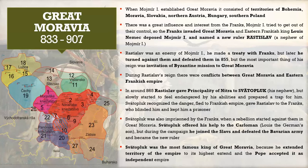Rastislav was an enemy of Mojmír the First — they did not have a good relationship even though they were uncle and nephew. Rastislav made a treaty with the Franks to become king, but later turned against the Franks and defeated them in 855. The treaty was simply to get on the throne.